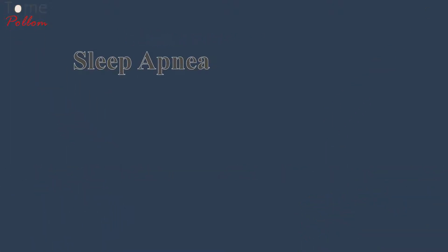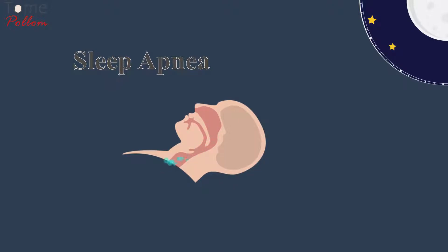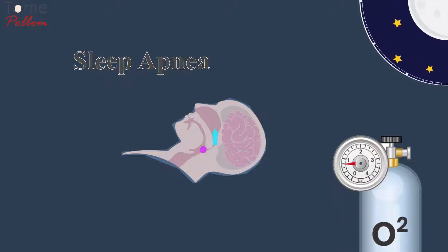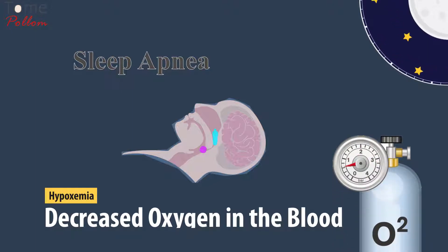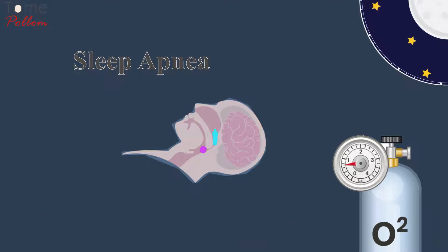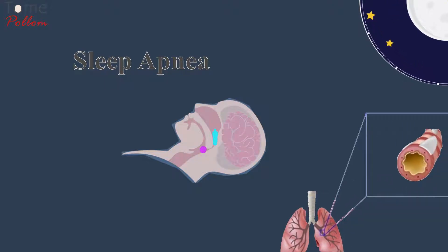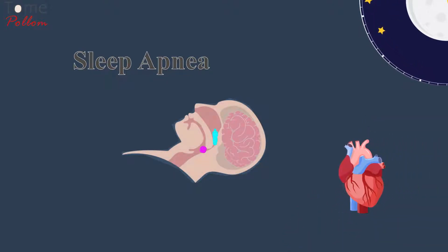Sleep apnea. The abnormal nighttime breathing pattern known as sleep apnea occurs either when the pharyngeal muscles relax and push back, obstructing the airway, or when the central nervous system doesn't orchestrate the respiratory muscles well. Ultimately, the decreased pulmonary ventilation results in a temporary oxygen deprivation, hypoxemia, or decreased oxygen in the blood. When the heart and brain get depleted of oxygenated blood, the sympathetic nervous system gets activated to dilate the bronchi and increase cardiac contraction to increase blood flow.